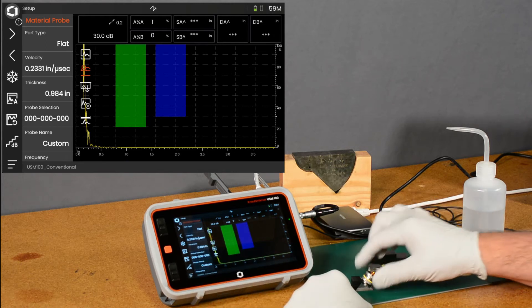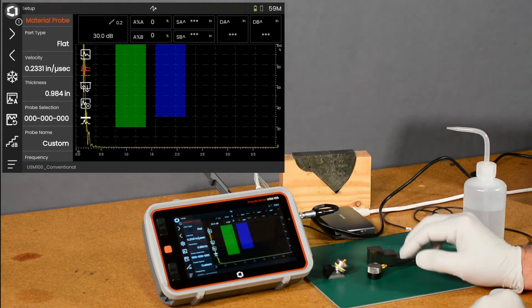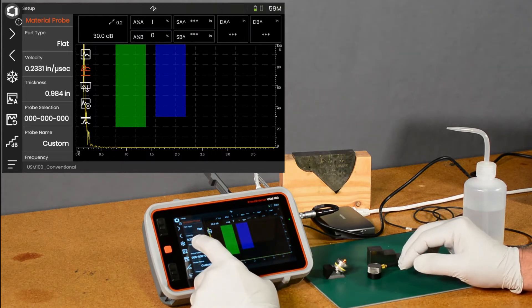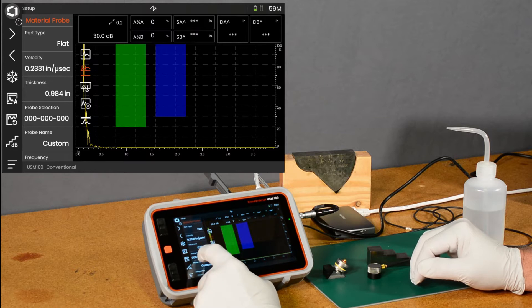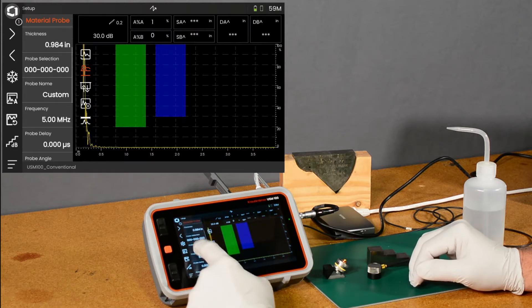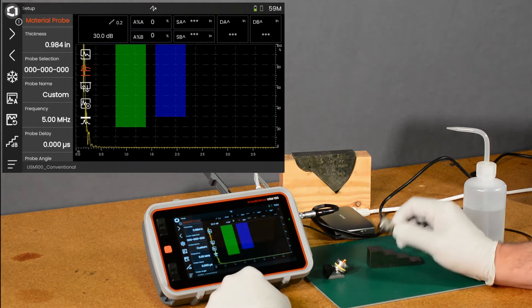but we can come in here and look at the probe setup. Because we're going to be doing a straight beam calibration on a steel block, the default velocity of 0.23 inches per microsecond is going to be close. The probe frequency is already selected at 5 MHz, so that's going to do a good job of setting the pulsar width.